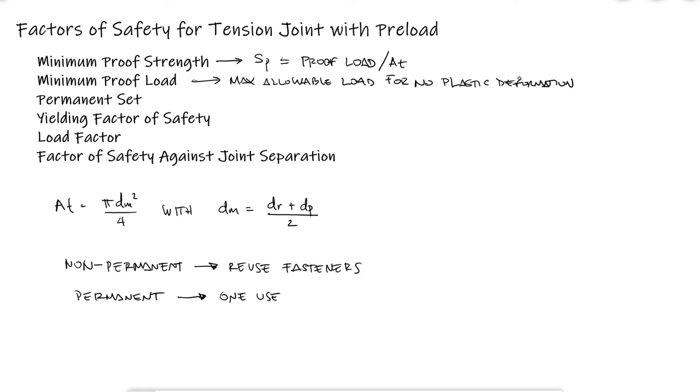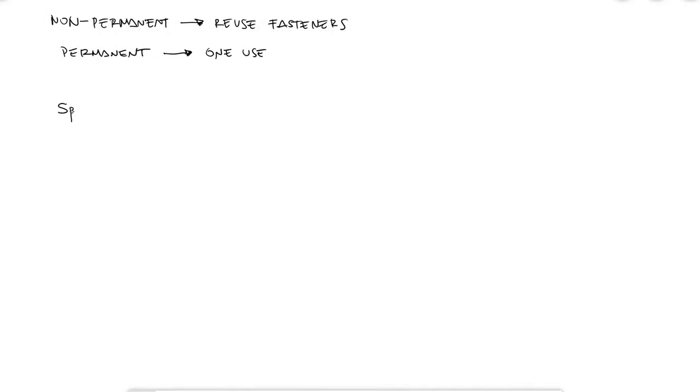The proof strength roughly corresponds to one ten-thousandth of an inch permanent set in the fastener, which is the first measurable deviation from elastic behavior.